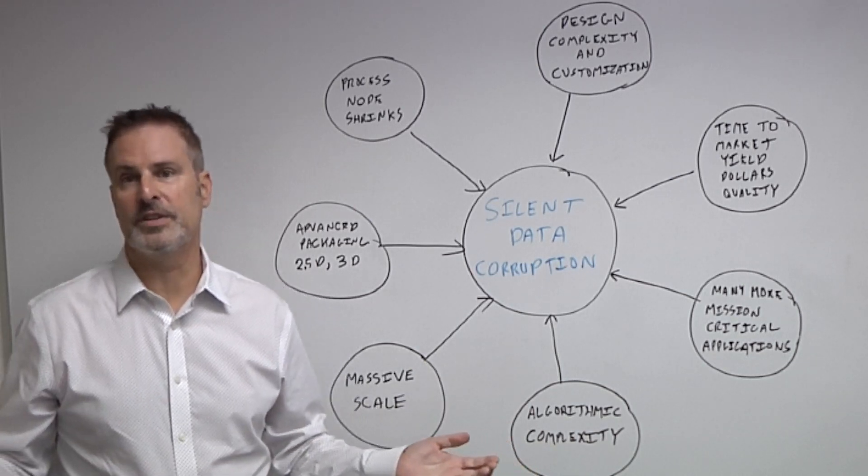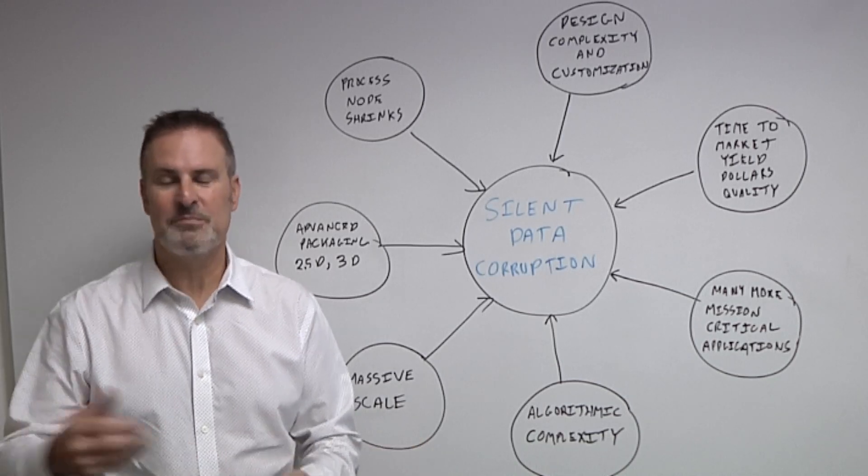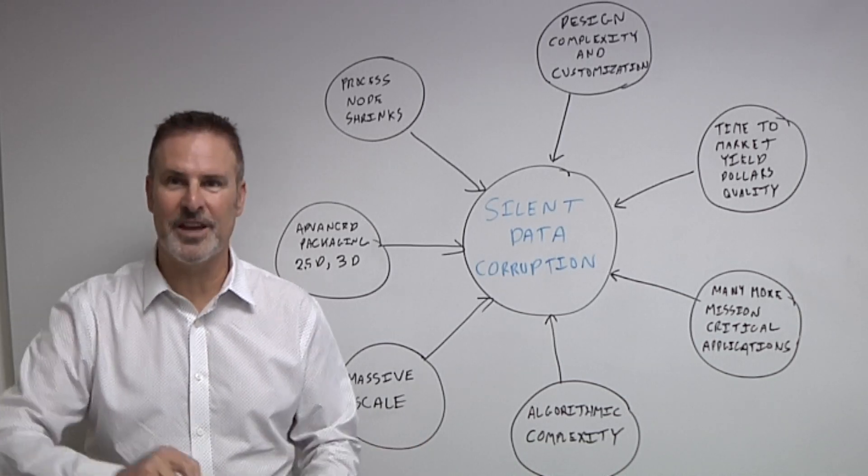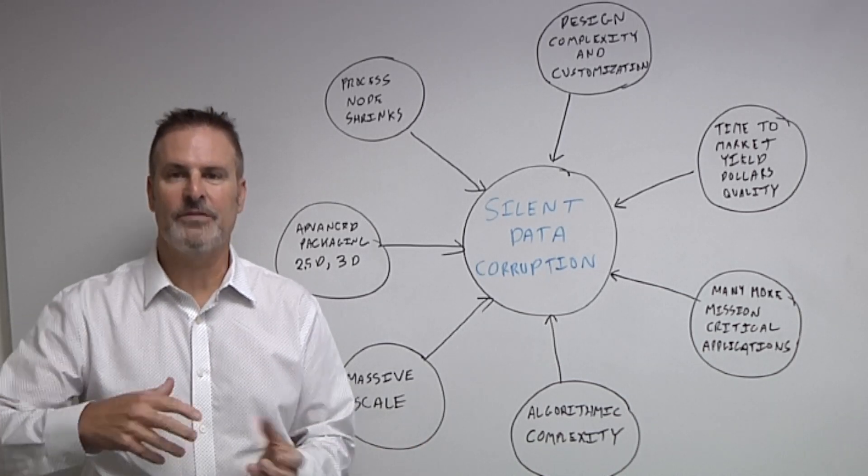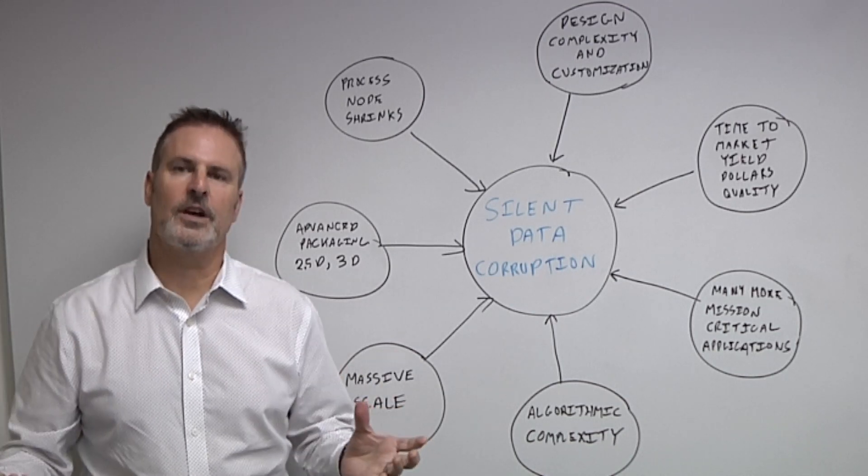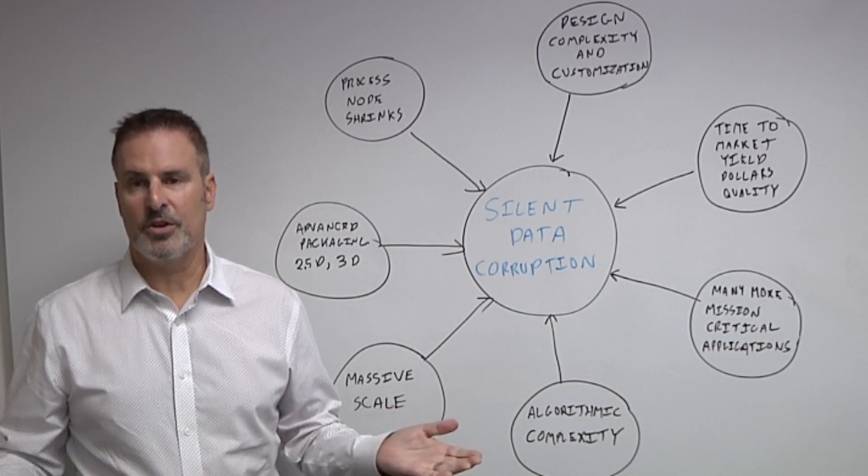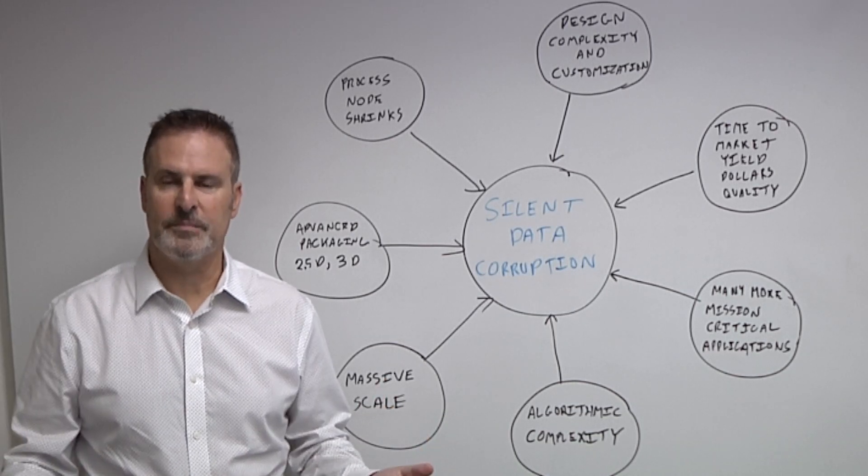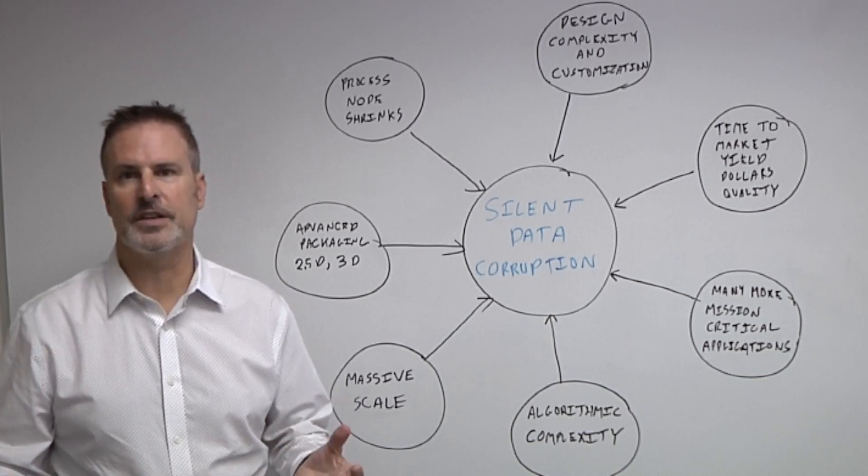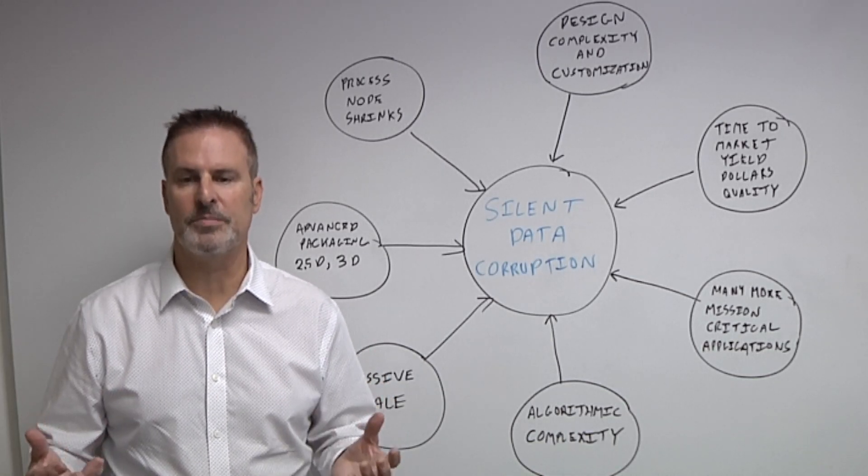For example, compute in memory. For the longest time, we just relied on memory to store some information and get it back out. But now if you have compute going directly in the memory cells, you're now taking the technology and using it in different ways than before. Similarly, with the AI chips, you see a lot of very interesting architectural approaches and hardware approaches that are being used there.